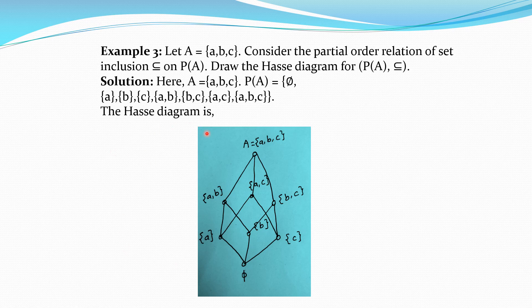∅ is a subset of every set, so ∅ is related to each element. But ∅ ⊆ {a}, {b}, {c} directly — there is no set X such that ∅ ⊆ X and X ⊆ {a}. So above ∅ at the upper level we take three elements: {a}, {b}, {c}, and we join ∅ to {a}, ∅ to {b}, and ∅ to {c} as they are directly related.